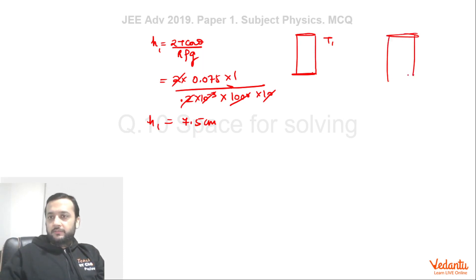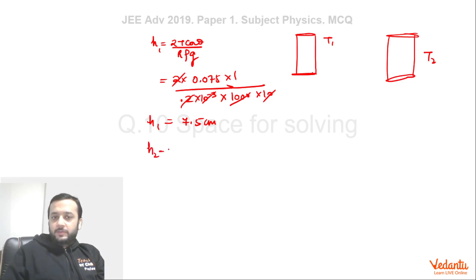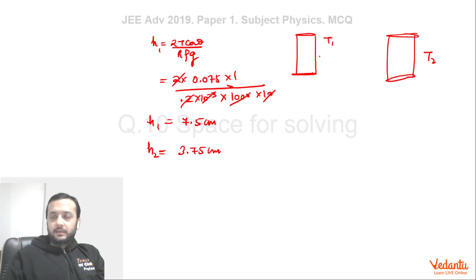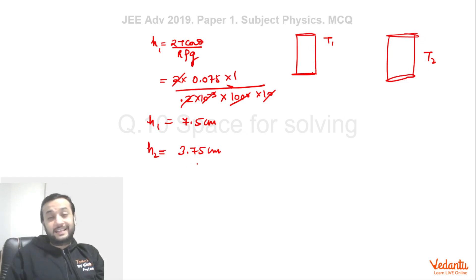For capillary T2, everything is same, just that θ = 60°. So we multiply by cos 60° and the whole thing is multiplied by half. So H2 = 7.5 / 2 = 3.75 centimeters. That means if we have a capillary made entirely of T2 material, the water will rise up to 3.75 cm.